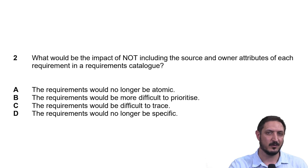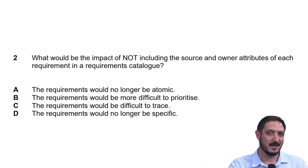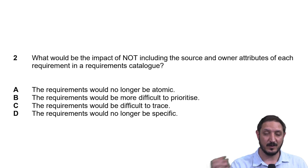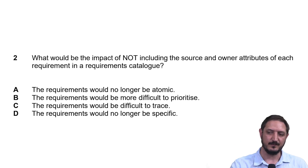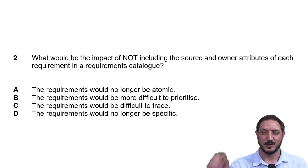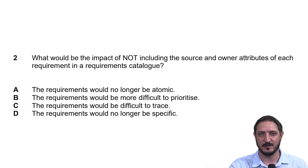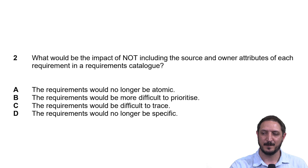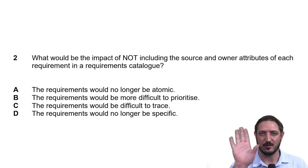The source can also be a document. If we elicited requirements through document analysis — looking through documentation of an old system — we write that document down as the source. We may even need to include the page number so we can go back and verify where we found that requirement and confirm it is clear and valid.